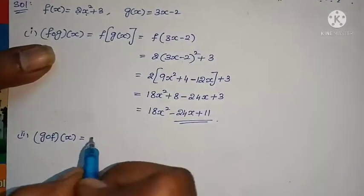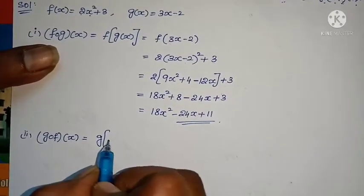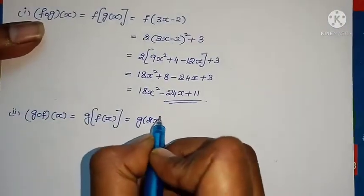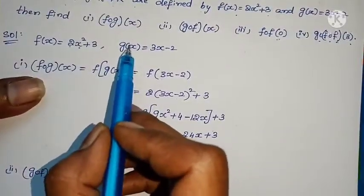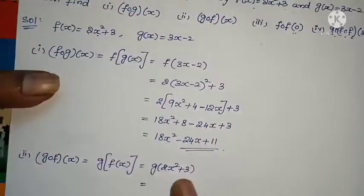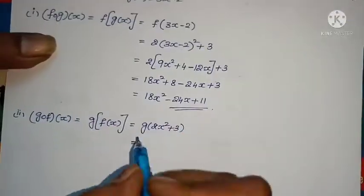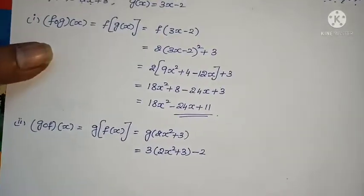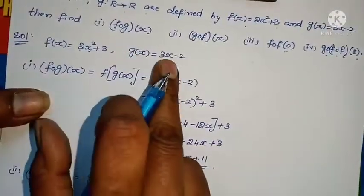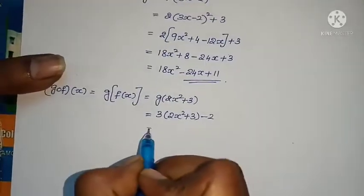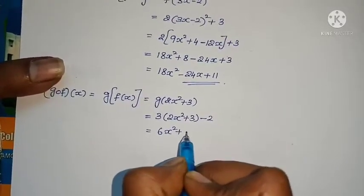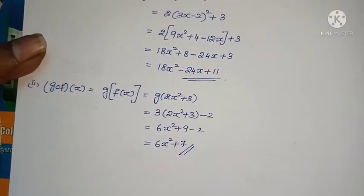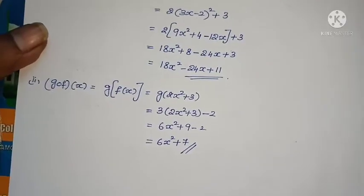Next, g∘f(x). Be careful. g∘f with brackets gives g(f(x)). f(x) value is 2x² + 3. In the g(x) model, wherever x appears, substitute this value. g(x) model is 3x - 2, so substitute: 3(2x² + 3) - 2 = 6x² + 9 - 2 = 6x² + 7. Very simple.